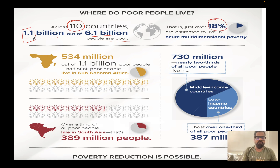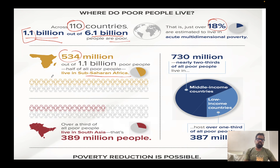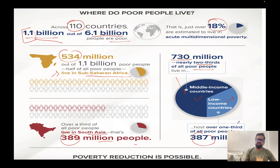Within that 1.1 billion, 534 million — roughly half — live in Sub-Saharan Africa. Another 389 million people live in South Asia. When we compare middle income and low income countries, nearly two-thirds, amounting to 730 million people, live in middle income countries, and about 387 million — roughly one-third of all poor people — live in low income countries.